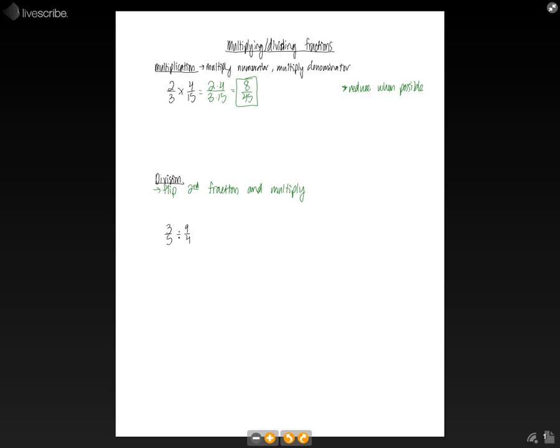So if we look at the example we have 3/5 divided by 9/4. So the first thing that we're going to do is flip the second fraction, so it's going to become 4/9, and then we're going to multiply this by our first fraction.